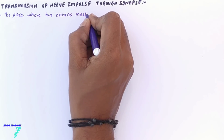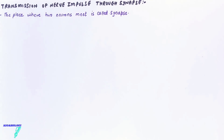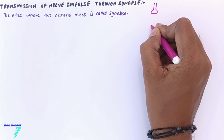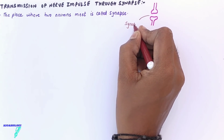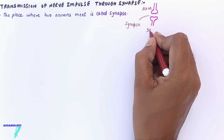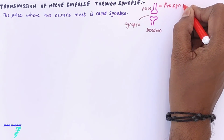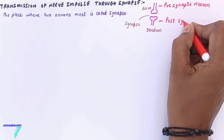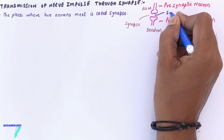A neuron has two parts: the cytone and the axon. The cytone has the dendrons and the axon has the axon endings. When two neurons meet, the axon ending of one neuron and the dendron of the next neuron — wherever they meet — that place is called a synapse. The axon part is called the pre-synaptic knob and the dendron part is called the post-synaptic knob.